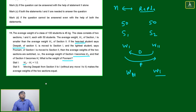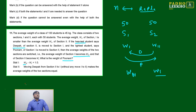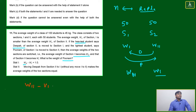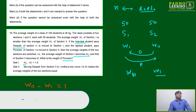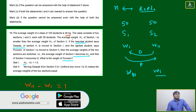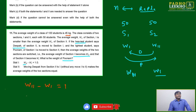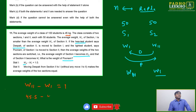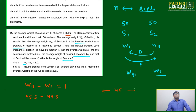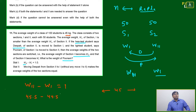Statement 1: w2 minus w1 equals 1. The overall average is already given as 45. If the difference between the two section averages is 1 and the combined average is 45, then one side will be 0.5 more and the other 0.5 less. So w2 = 45.5 and w1 = 44.5.